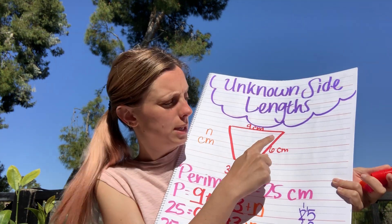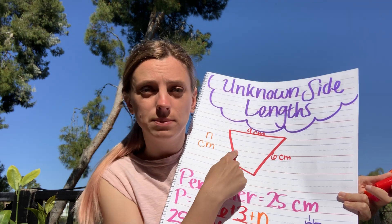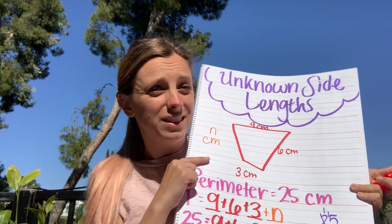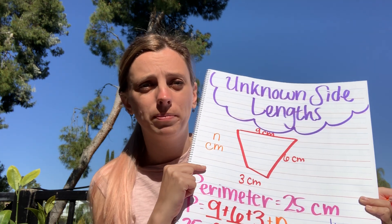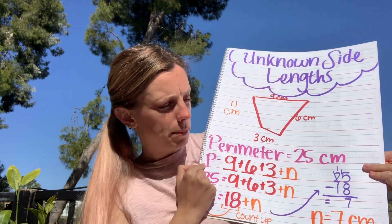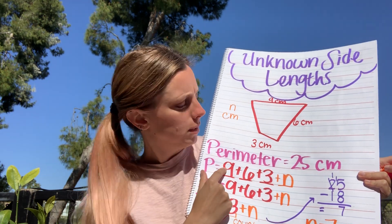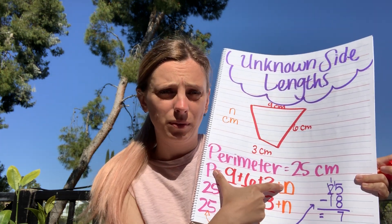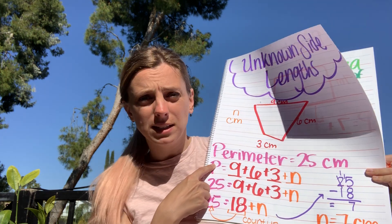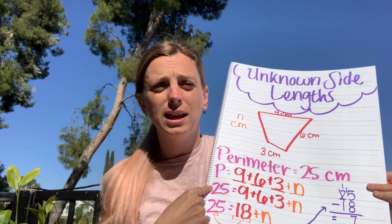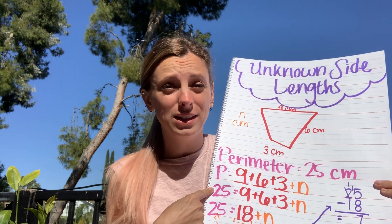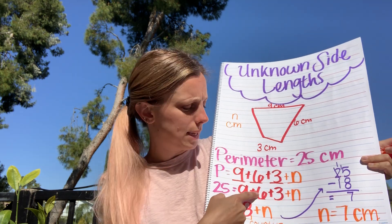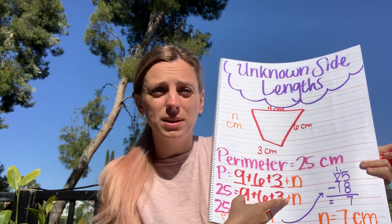So if I add nine centimeters, six centimeters, three centimeters, and whatever this missing side is together, I should get to 25. That's all we need to solve this problem. I put perimeter P equals nine plus six plus three plus that missing side N. I'm going to plug in that 25 centimeters for P because they've already told me the perimeter. So 25 is going to equal nine plus six plus three plus our missing side N.